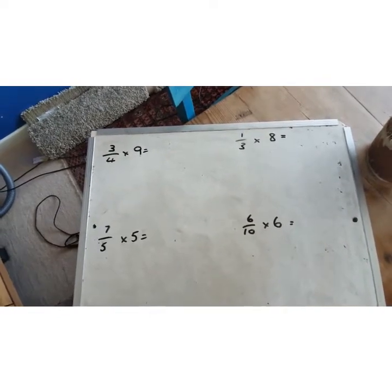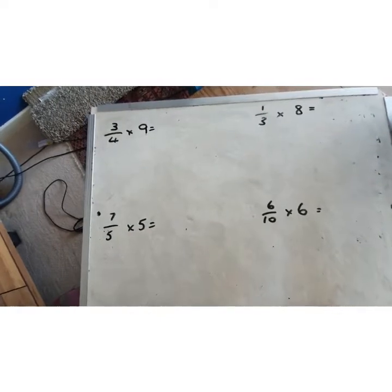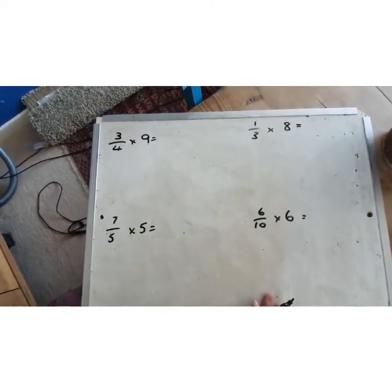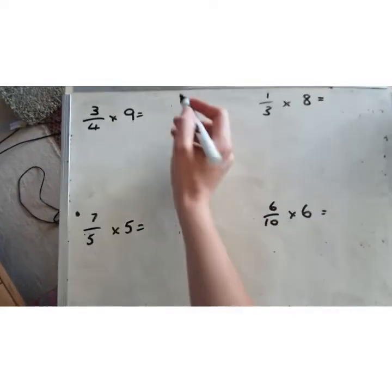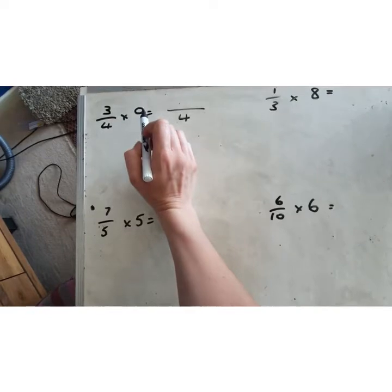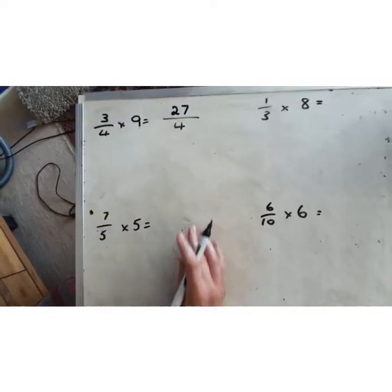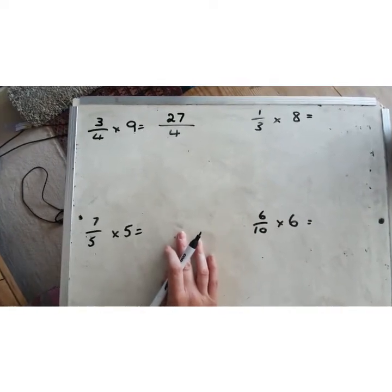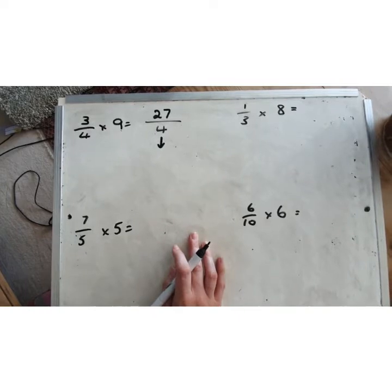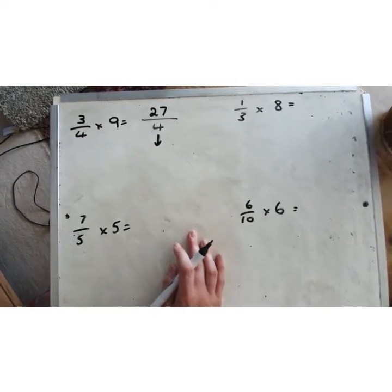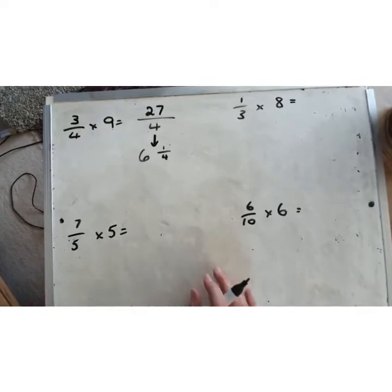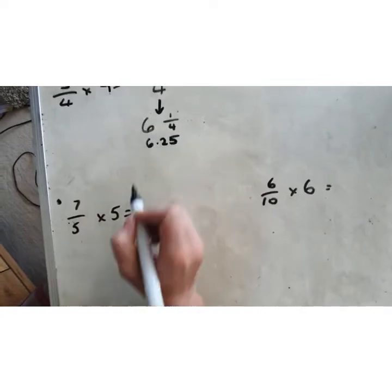You should have four answers already. For three quarters times nine: the denominator stays the same — we're still dealing with quarters. Nine times three is 27, so the answer is 27 quarters. As a mixed number, 27 divided by four is six remainder one, giving six and one quarter. The decimal equivalent is 6.25.